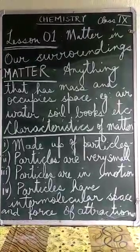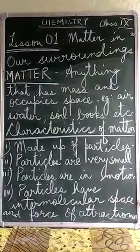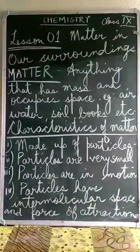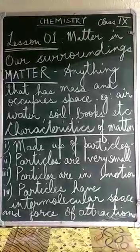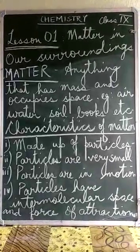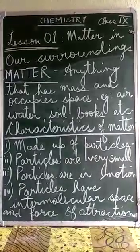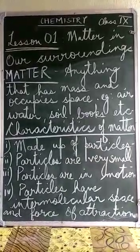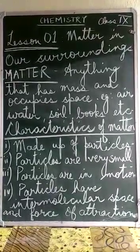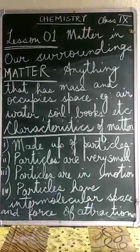There are altogether four lessons in chemistry, and lesson one is Matter in Our Surroundings. Anything that has mass and occupies space is matter. Living things as well as non-living things — plants, animals, as well as human beings — are made up of matter. But the particles of living beings are cells, the fundamental unit of life.